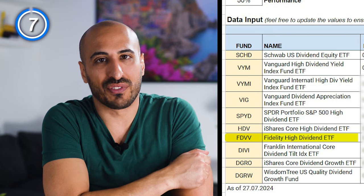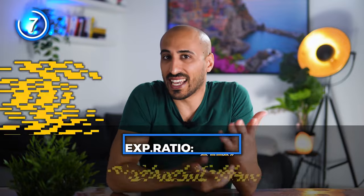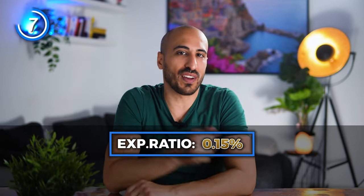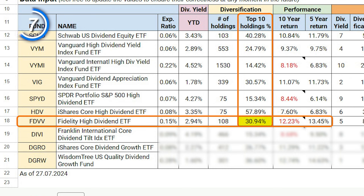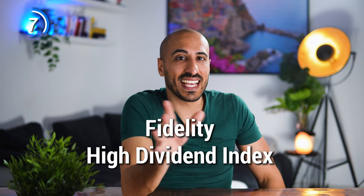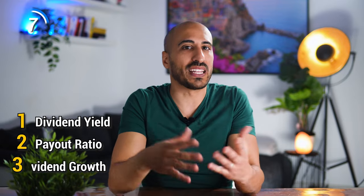ETF number 7 is FDVV, the Fidelity High Dividend ETF. FDVV has a dividend yield of 2.94%, an expense ratio of 0.15%, and 108 holdings. The top 10 weigh 30.7% of the total portfolio, and the average annual return has been 12.23% in the last 8 years — because the ETF is only 8 years old — and 13.45% in the last 5. This fund tracks the Fidelity High Dividend Index, which selects companies based on dividend yield, payout ratio, and dividend growth.